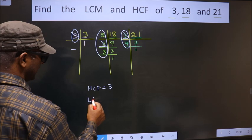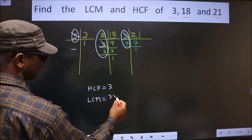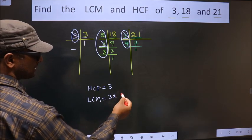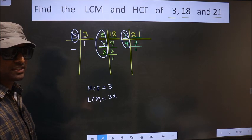Now to get LCM, whatever you got as HCF, to that we should multiply by certain numbers. How do we decide those numbers?